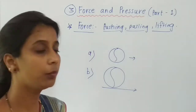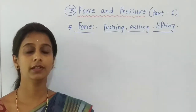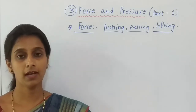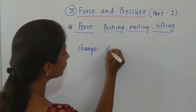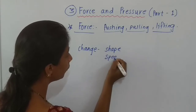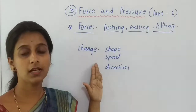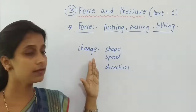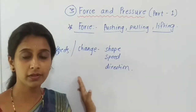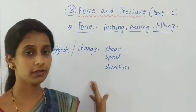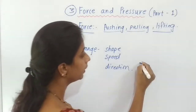Now, force is properly defined as a physical quantity that changes the shape, speed, and direction of any object. So force can change the shape of an object, the speed of an object, and the direction of an object. These three things changed by force are also called the effects of force. Remember this carefully — it may be asked: what are the effects of force?